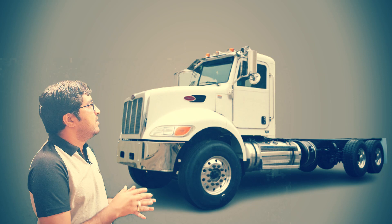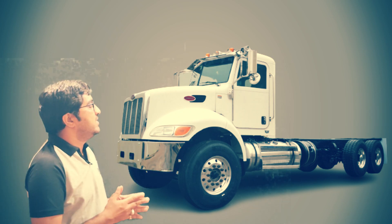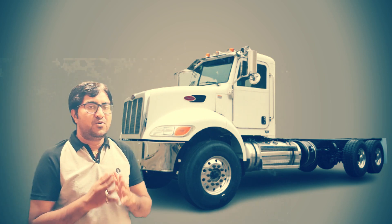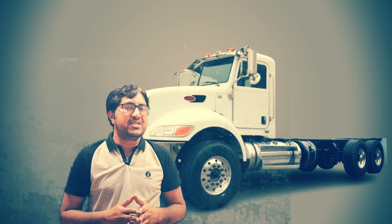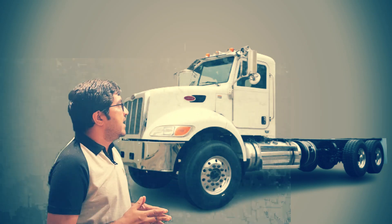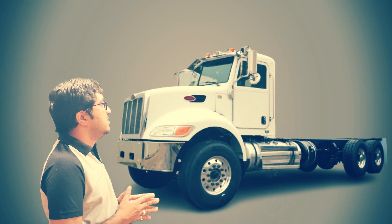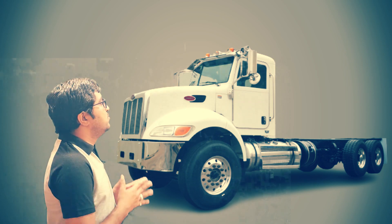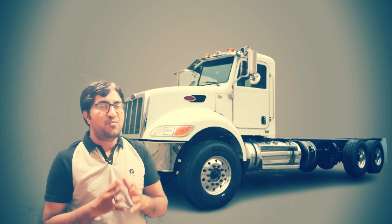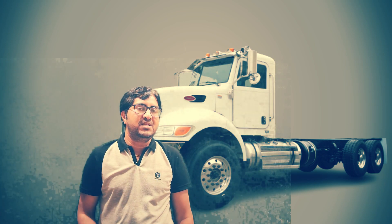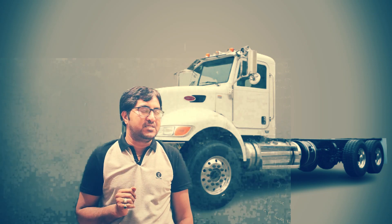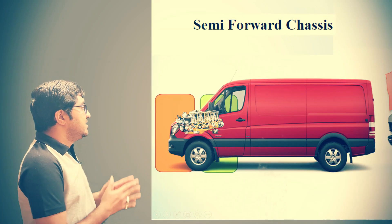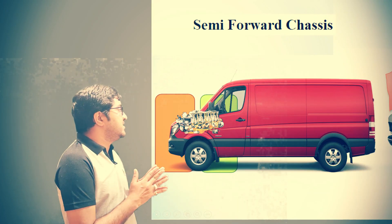In conventional chassis, the engine is mounted in front side of the driver cabin, the chassis portion is not utilized for goods and passengers, but a heavy engine can be fitted which can be used to give more power. This is the main advantage of conventional chassis.